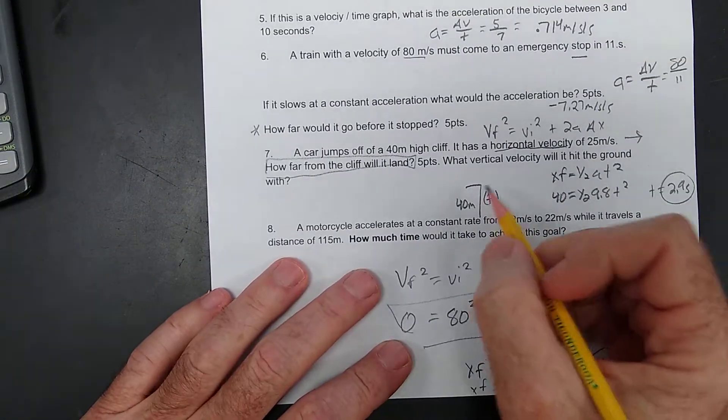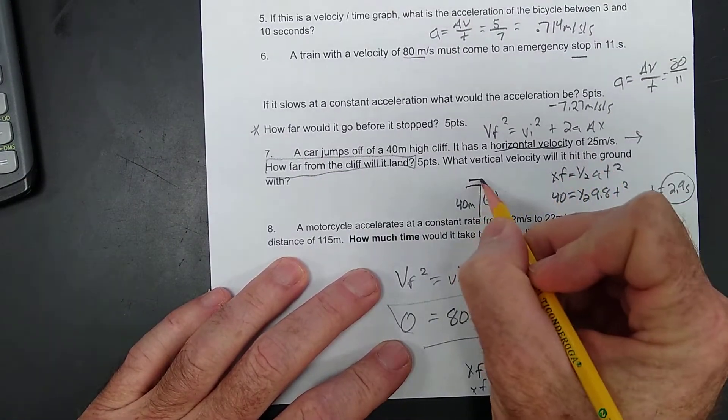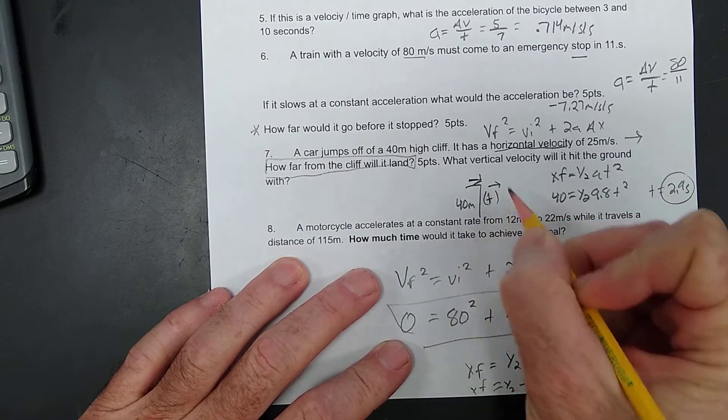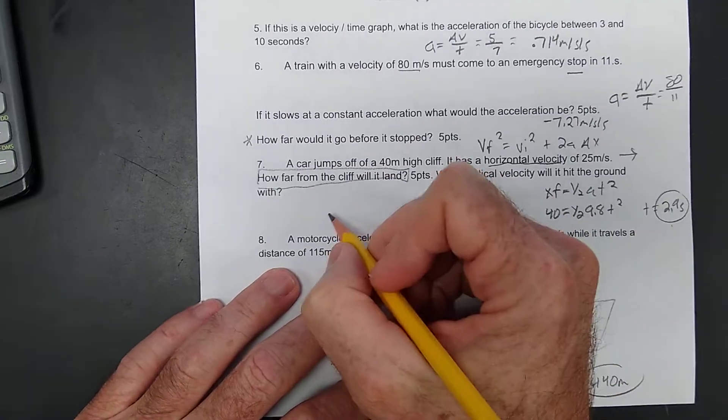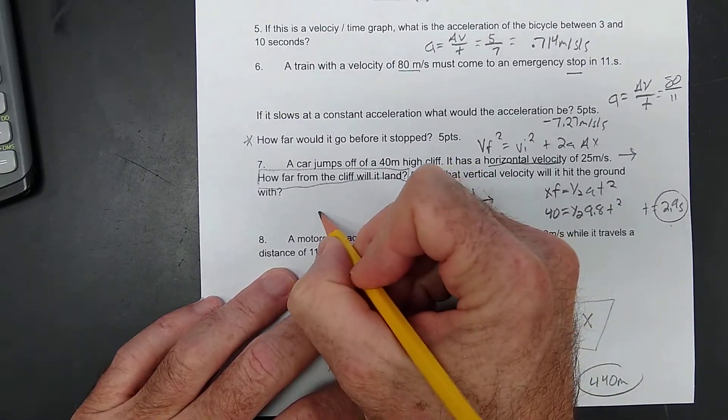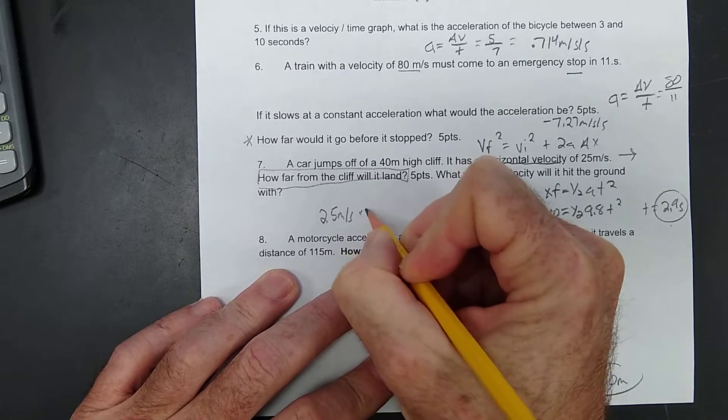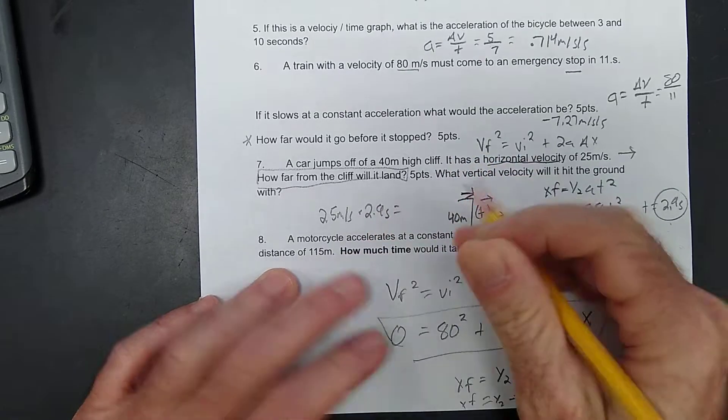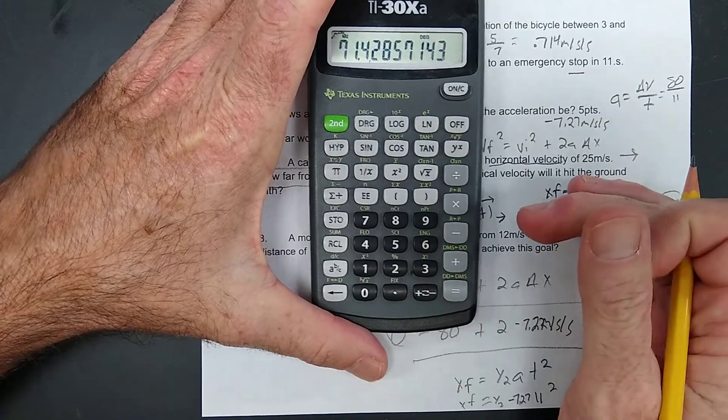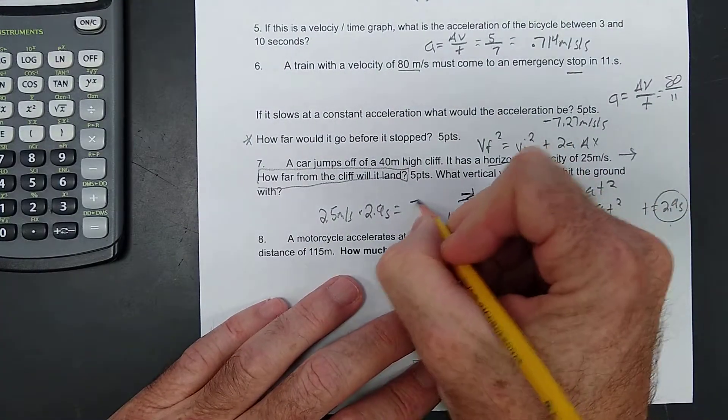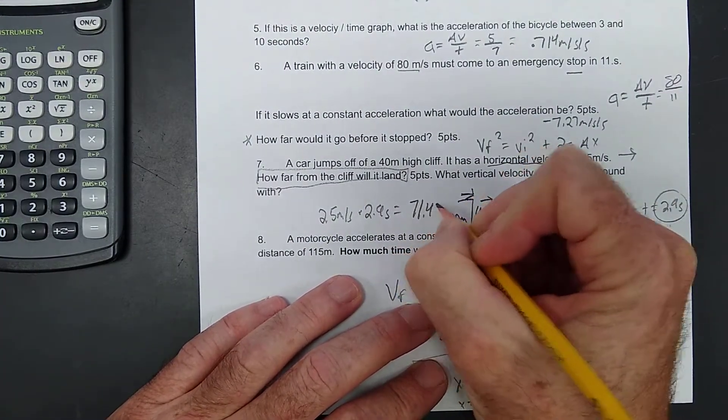Alright? How far from the cliff will it land? Well, it's going this way at 25 meters per second. But, it only gets to do that for 2.9 seconds. So, 25 meters per second for 2.9 seconds. About 71.4 meters away.